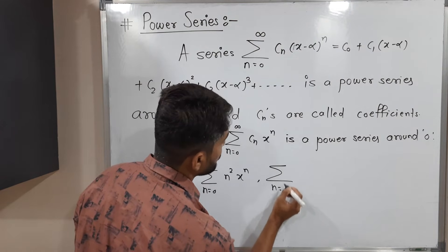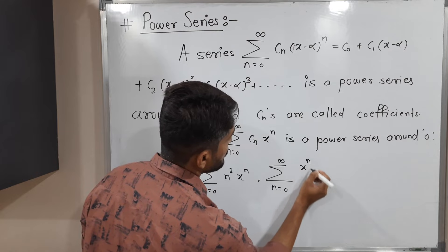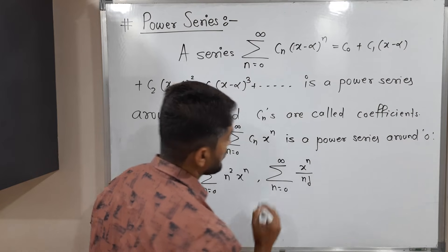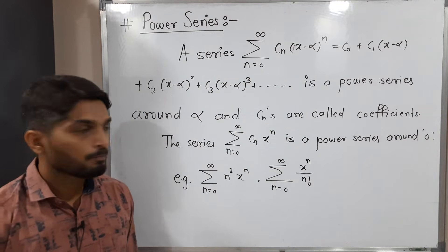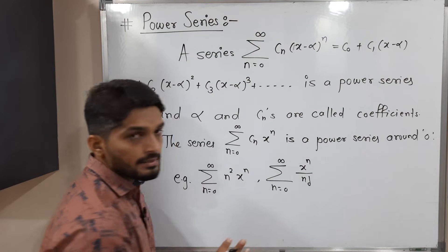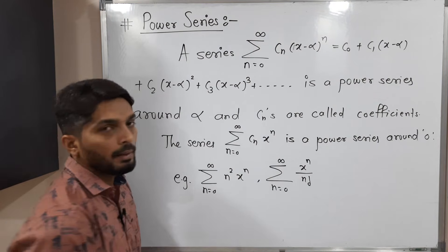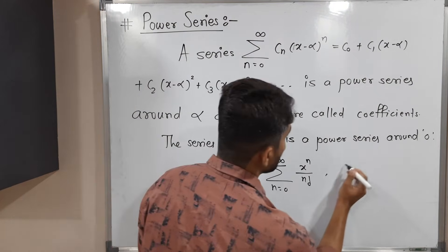Summation, n running from 0 to infinity, x raised to n upon n factorial. Will you guess what is cn here? x raised to n is as it is, right? So our cn is 1 by n factorial. Let's discuss one more.